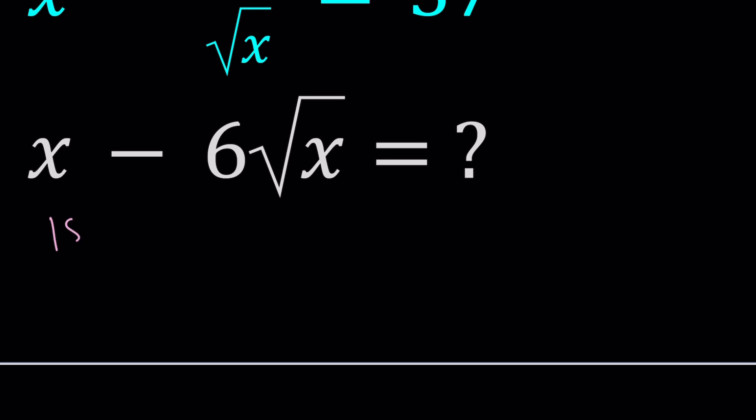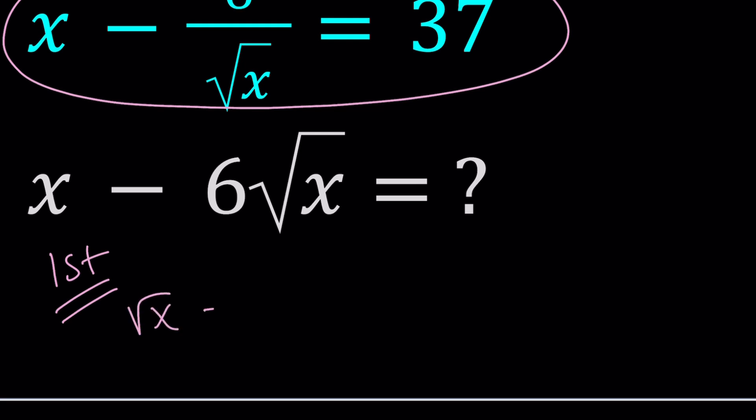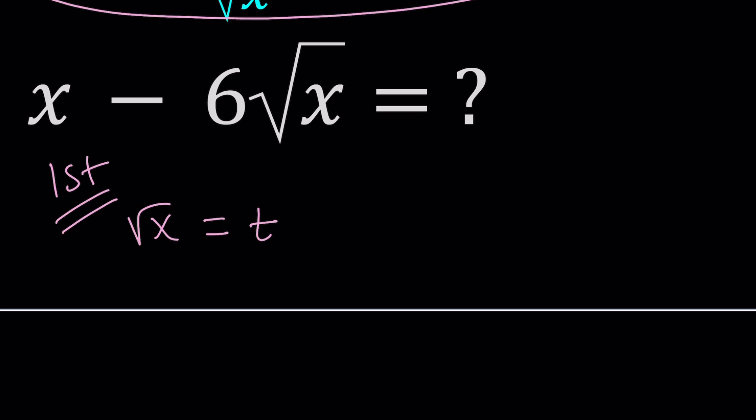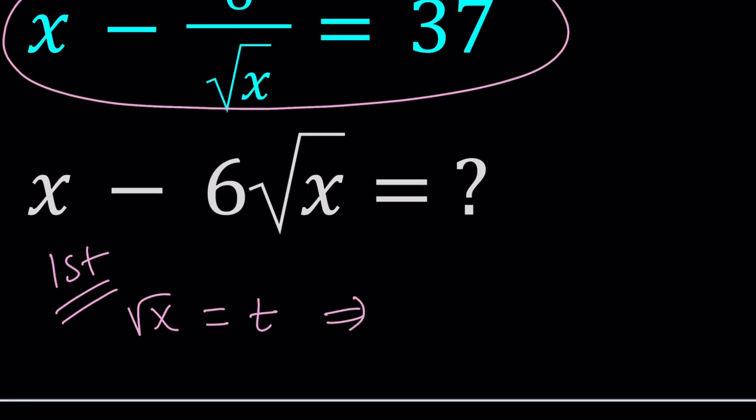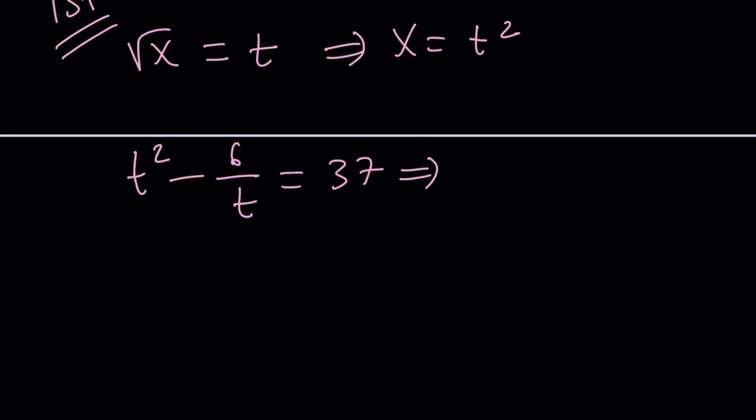All right, let's start with the first method. For my first method, since I have a radical expression, I want to solve for x. Let's go ahead and replace square root of x with something, how about t? Once you replace square root of x with t, x becomes t squared. Let's go ahead and plug these in. x becomes t squared minus 6 divided by t equals 37. Let's multiply everything by t. That gives us t cubed minus 6 equals 37t. And let's put everything on the same side. t cubed minus 37t minus 6 equals 0.